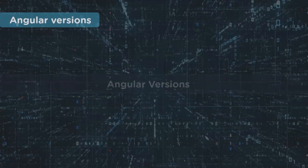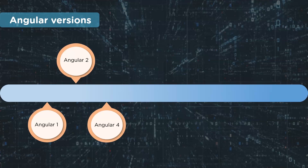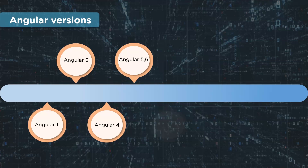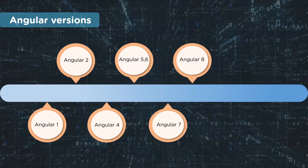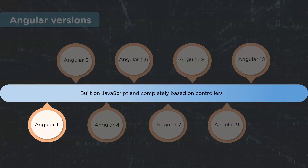Ever since its inception, Angular has been consistent with releasing new features in their versions. First up was Angular 1, then Angular 2, 4 — Angular 3 was skipped — then Angular 5, 6, 7, 8, 9, and finally in 2020 they released Angular 10. Angular 1.x, also known as AngularJS, was a JavaScript-based open source front-end web application framework.